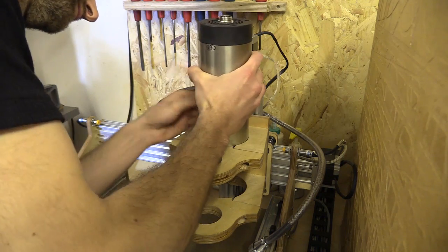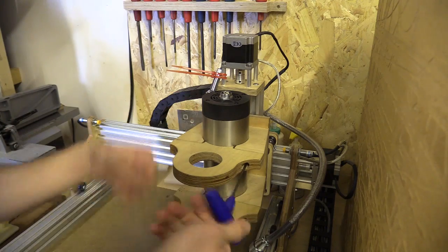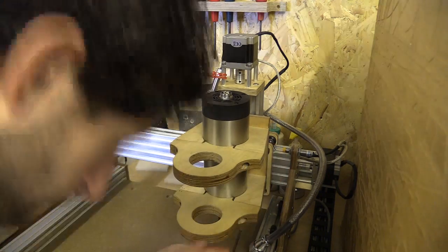The collet is also a little bit bigger on this one. This is an ER16 while the other one was an ER11 so at least I get a little bit more option with what I can attach to this.